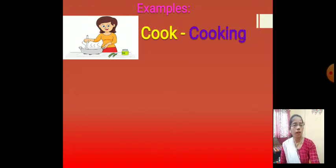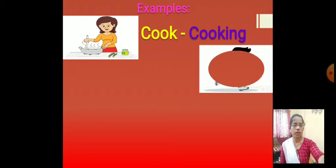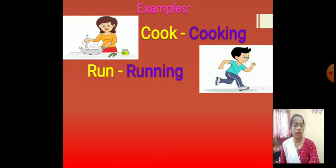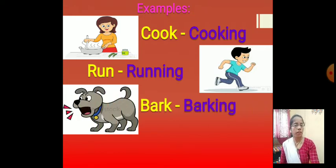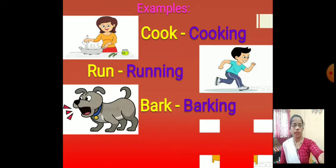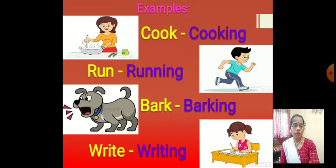The word is 'cook.' We can change the verb by adding ING — the word becomes 'cooking.' Next one: 'run.' Here is the verb run. We can add ING to get 'running.' Next one: 'bark.' The verb bark — we can use the ING form, and the word becomes 'barking.' Next one: 'write.' We can add ING to write, making it 'writing.'